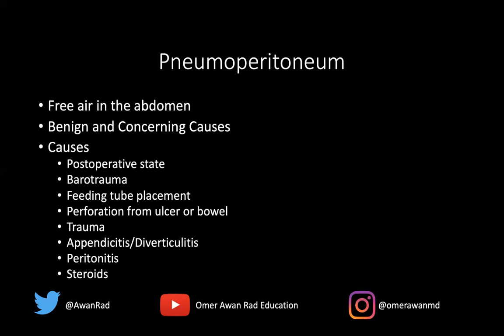Some of the most important causes of pneumoperitoneum: one is a post-operative state. After an exploratory laparotomy, you'll normally have free air in the abdomen — that's not necessarily concerning because you violated the peritoneum. However, if there are large amounts of free air even after laparotomy, that can be concerning. Barotrauma is another cause: when a patient has positive pressure ventilation, they can develop pneumothoraxes or pneumomediastinum, and that air can dissect into the peritoneum, causing small amounts of pneumoperitoneum.